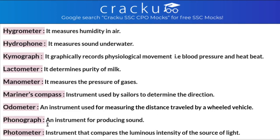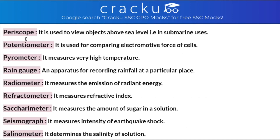Phonograph: it is an instrument for producing sound. Photometer: it is an instrument that compares the luminous intensity of sources of light. Periscope: it is used to view objects above sea level — used in submarines. Potentiometer: it is used for comparing electromotive forces of cells.